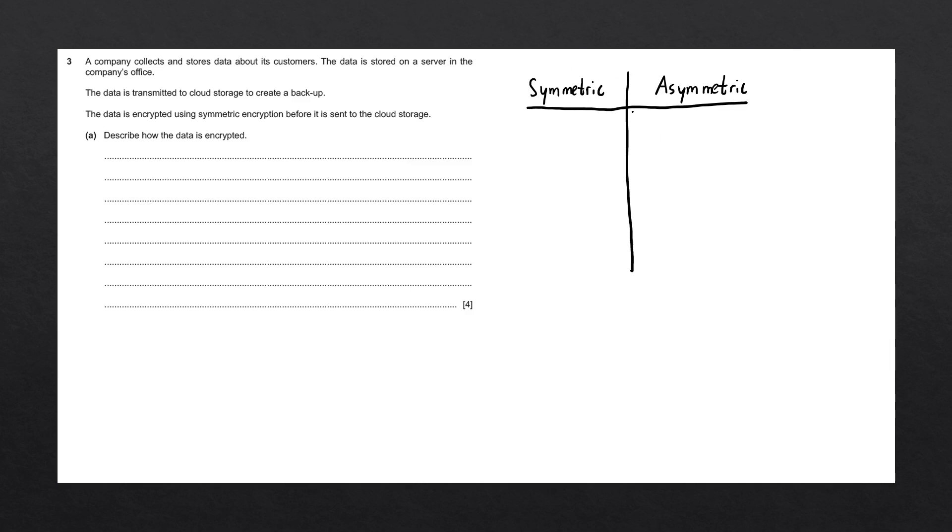Both algorithms encrypt data using what's called an encryption key. An encryption key is generally a random string of text that is applied to an algorithm in order to encrypt the message we want to send.